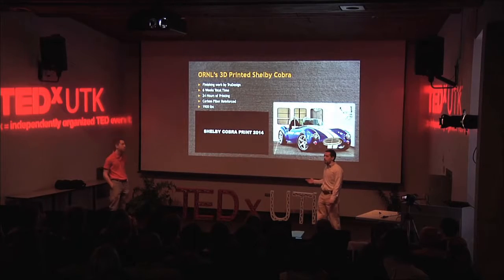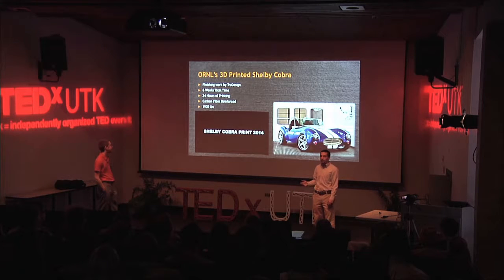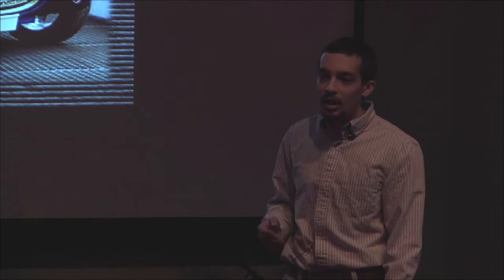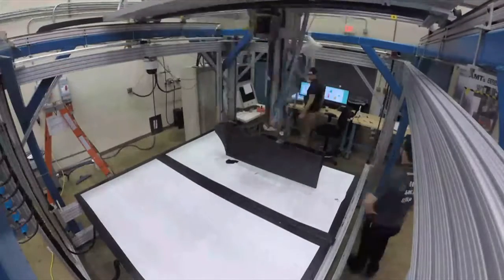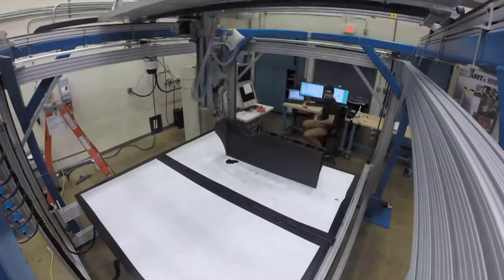This is a Shelby Cobra that is a replica of the original Shelby Cobra. It is made in part in honor of its 50th anniversary. It's made as an electronics testbed. So in addition to being a beautiful car that you may not actually be able to tell that it was 3D printed just by looking at, it also can be used to demonstrate and test other vehicle technologies such as wireless charging and other things that ORNL and other laboratories develop.